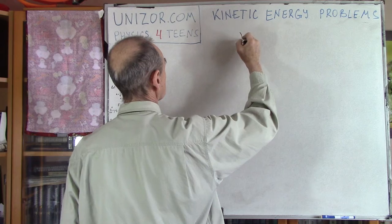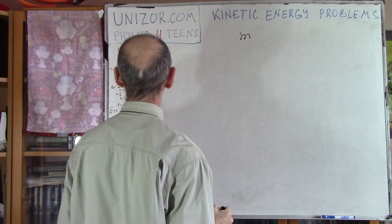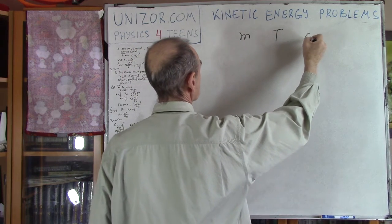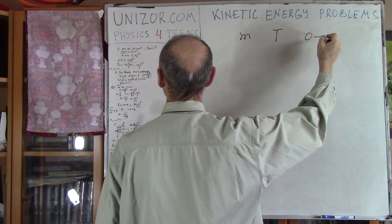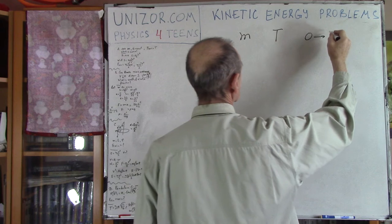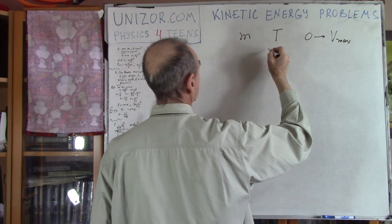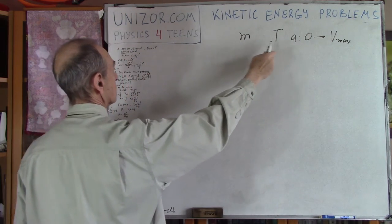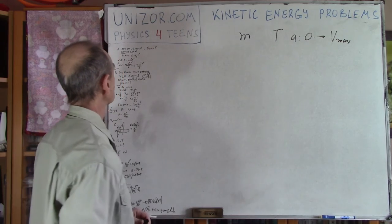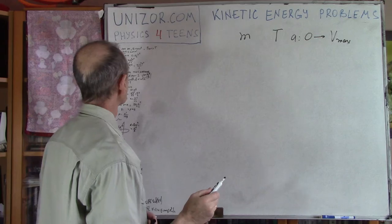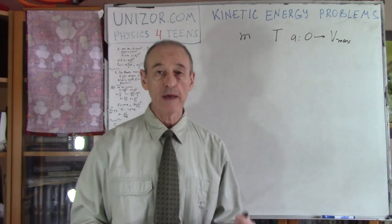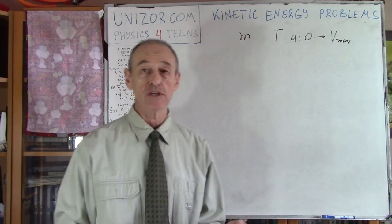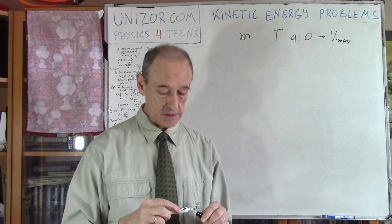You have a car of mass M, which accelerates during time t from speed zero to some maximum speed, and the acceleration is given. So, mass is given, time is given, and acceleration is given. The question is: what's the work performed by the engine of this car, and what's the kinetic energy at the very end of this acceleration?